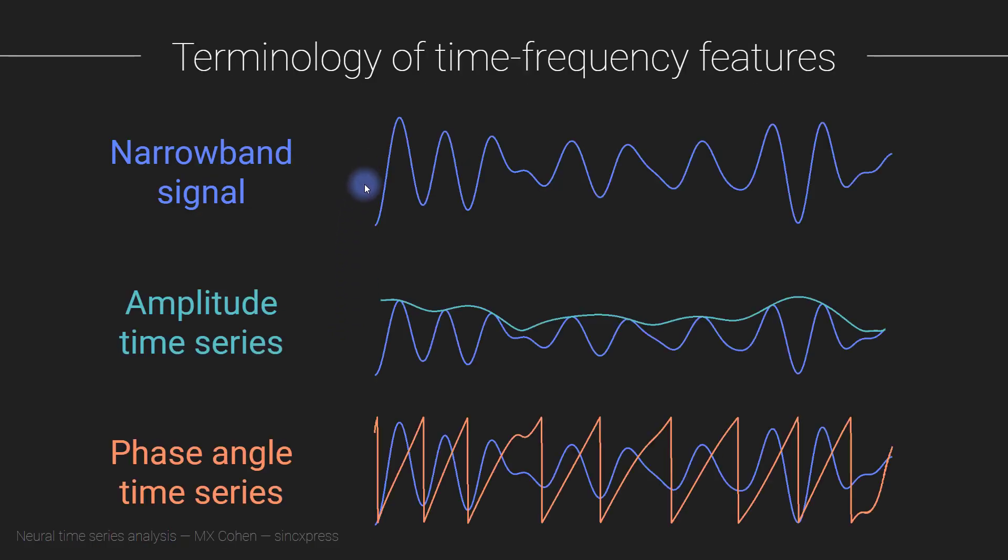By quick reminder, here is an example of a narrowband filtered signal. Here we have the amplitude time series, which we are not interested in right now. What we are interested in is the phase angle time series. Notice that it's going up and down, it looks like it has this sawtooth pattern, but that's because these are phase angles going around the circle, and at 2π it gets clipped back down to zero.